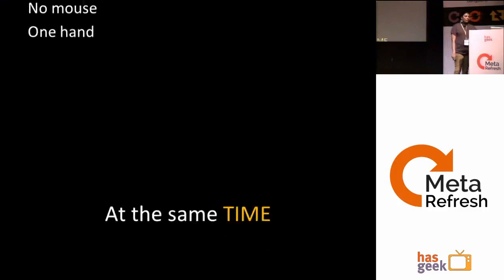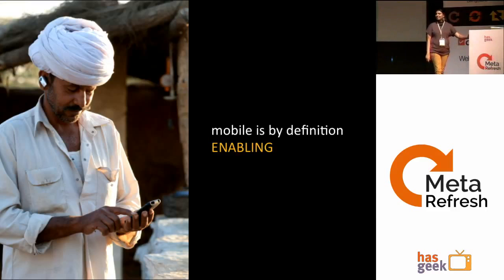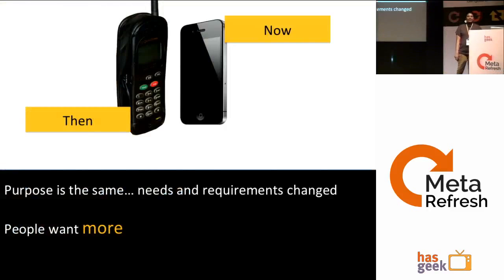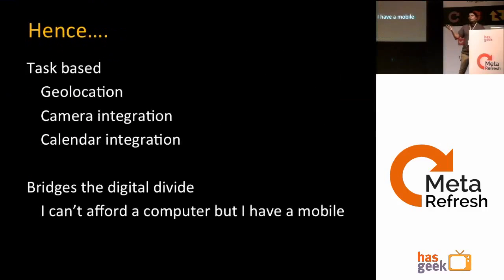At the same time, mobile is by definition enabling. The definition of mobile has changed from what it used to be. Rather than just being a calling or messaging device, it has added many new features — people want more from their devices. So many new features have been introduced: geolocation, camera, calendar — all these things make it enabling.